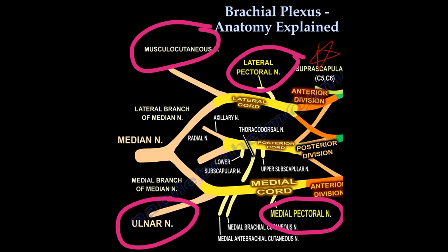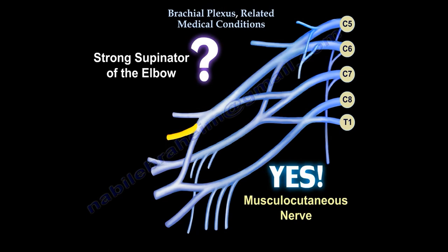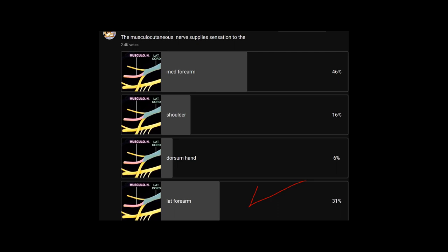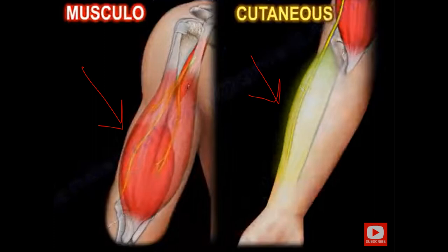Here is an arrangement of the brachial plexus. From the lateral side you get the musculocutaneous nerve; from the medial side, the ulnar nerve; and in the middle, the median nerve. Underneath, you have the posterior cord with the radial nerve and the axillary nerve. The strong supinator of the elbow is the biceps, supplied by the musculocutaneous nerve. The musculocutaneous nerve supplies sensation to the lateral part of the forearm and innervates the muscles of the anterior compartment of the arm, like the biceps and brachialis.